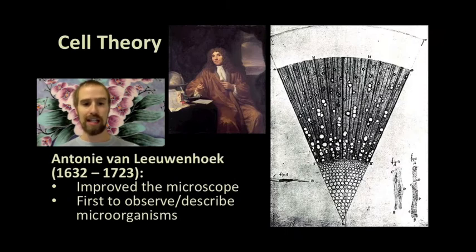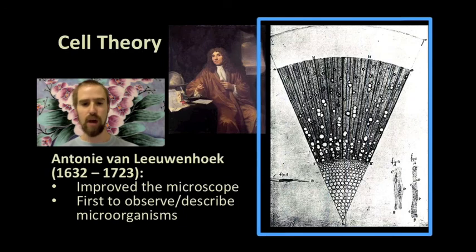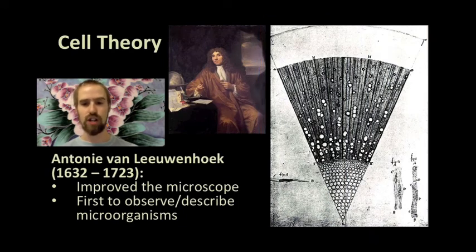Other scientists, like Leeuwenhoek, improved upon Robert Hooke's original design, and the field of microbiology began to grow. Scientists like Leeuwenhoek documented their work carefully in writing and in drawings, and their discoveries became the knowledge upon which future scientists would base their work. Leeuwenhoek, for example, examined the cellular structure of many plants and animals and was the first to observe and describe what we now call microorganisms, living creatures too small to see with the naked eye.